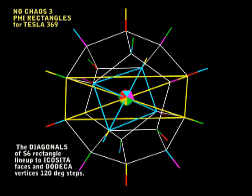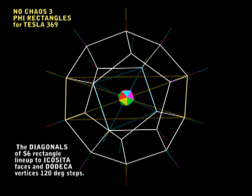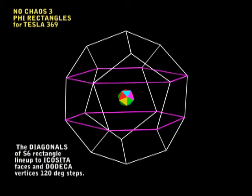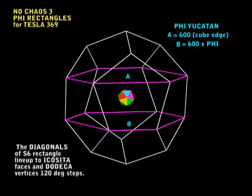Let's just go back to the dodeca and the Icosita in the center again. Now I'll bring in the Yucatan, the golden ratio Yucatan, on top and bottom. The longer length we know is 600, the edge of the cube. And the shorter length is the edge of the dodeca or the edge of the golden ratio rectangle.